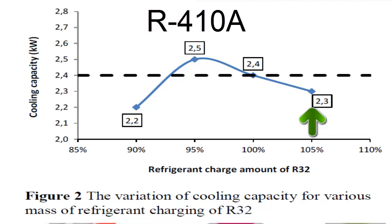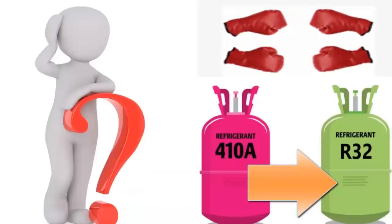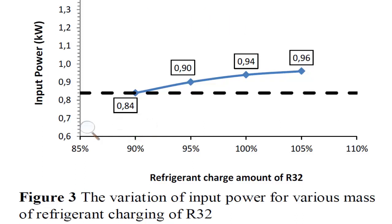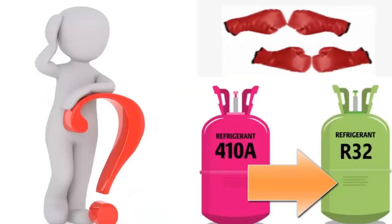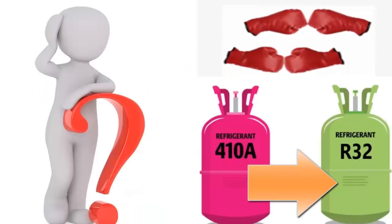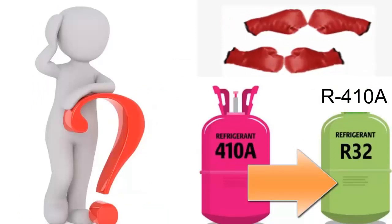7. Charging with 90% of the original R-410A amount using R-32 will maintain similar electrical consumption, but with lower cooling capacity. 8. Beyond 90%, the compressor's electrical consumption will increase compared to what it used to be with R-410A.